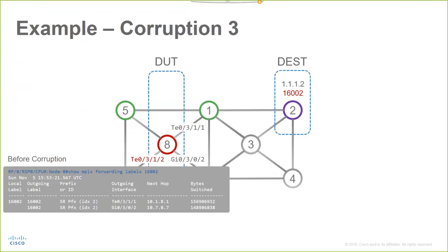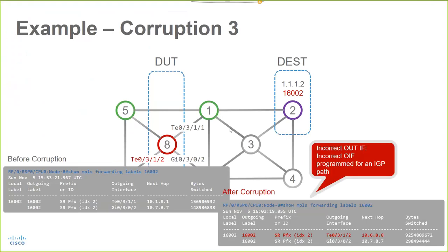Let's use another example. Well, let's assume now that instead of having a corruption of the label, what we're going to be corrupting is the outgoing interface for the LFIB entry corresponding to router number 2. So instead of sending the traffic to router number 1 as expected, we're sending the traffic to router number 6 instead. And hence the corruption that we are producing.